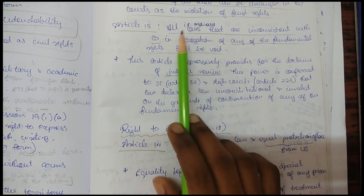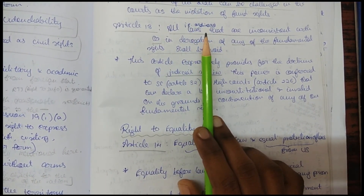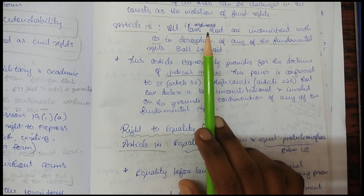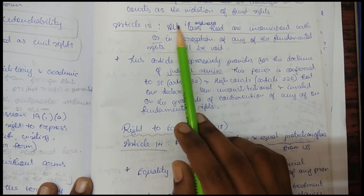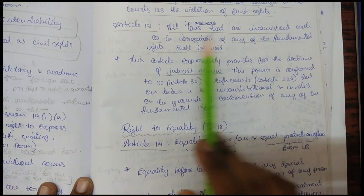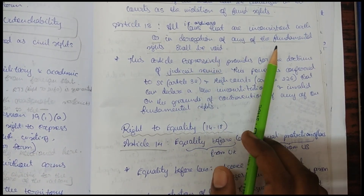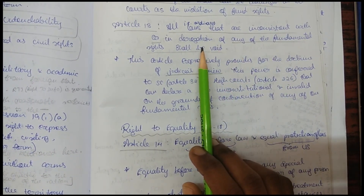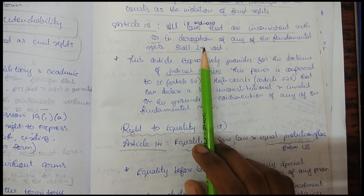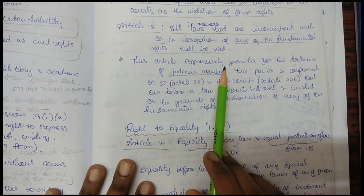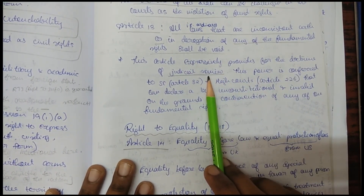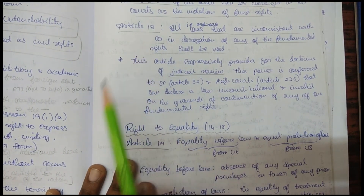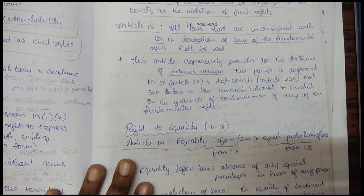Article 13 states that all laws that are inconsistent with or in derogation of any of the fundamental rights shall be void. This article expressly provides for the doctrine of judicial review, explicitly giving us the concept of judicial review.